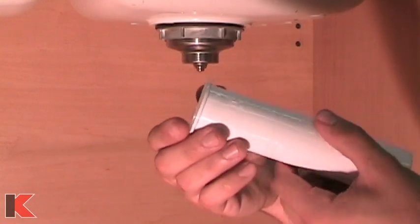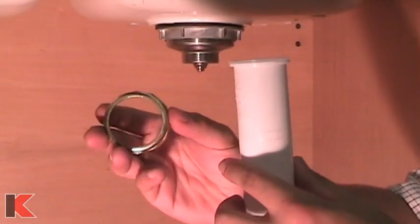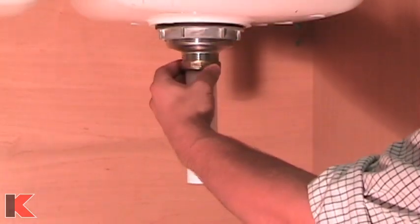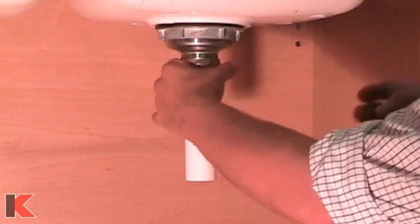Place the tailpiece washer onto the tailpiece and feed the nut up the pipe. Screw the tailpiece nut onto the strainer to attach the tailpiece. Hand tighten the nut.